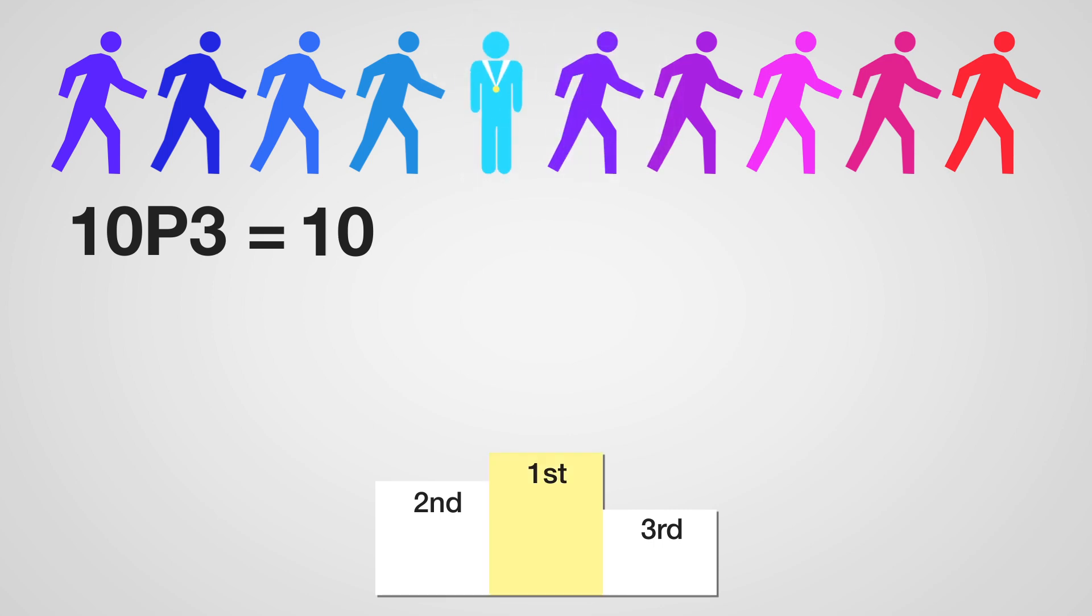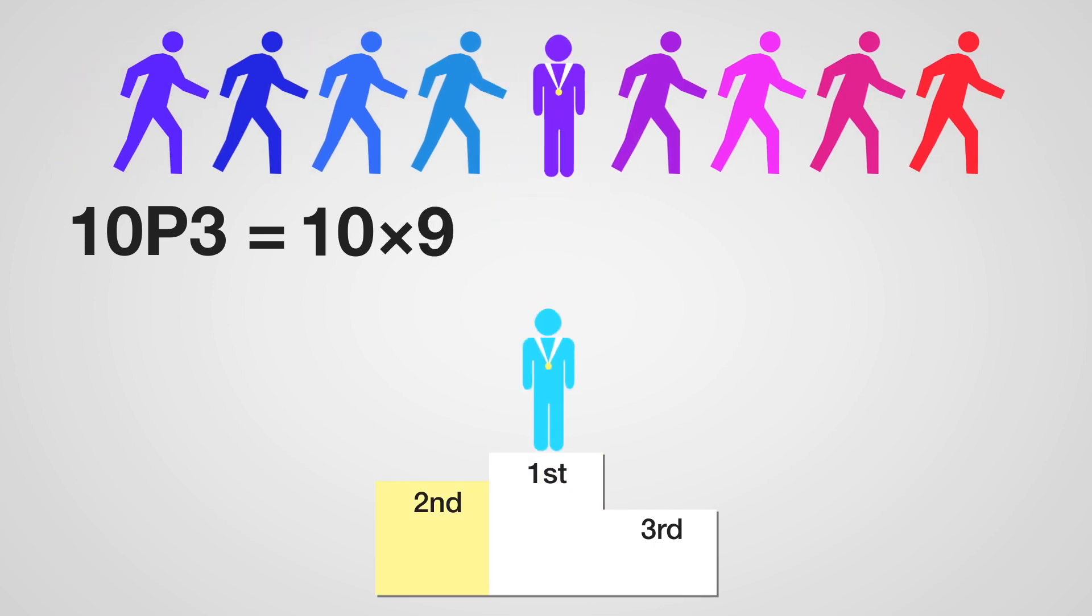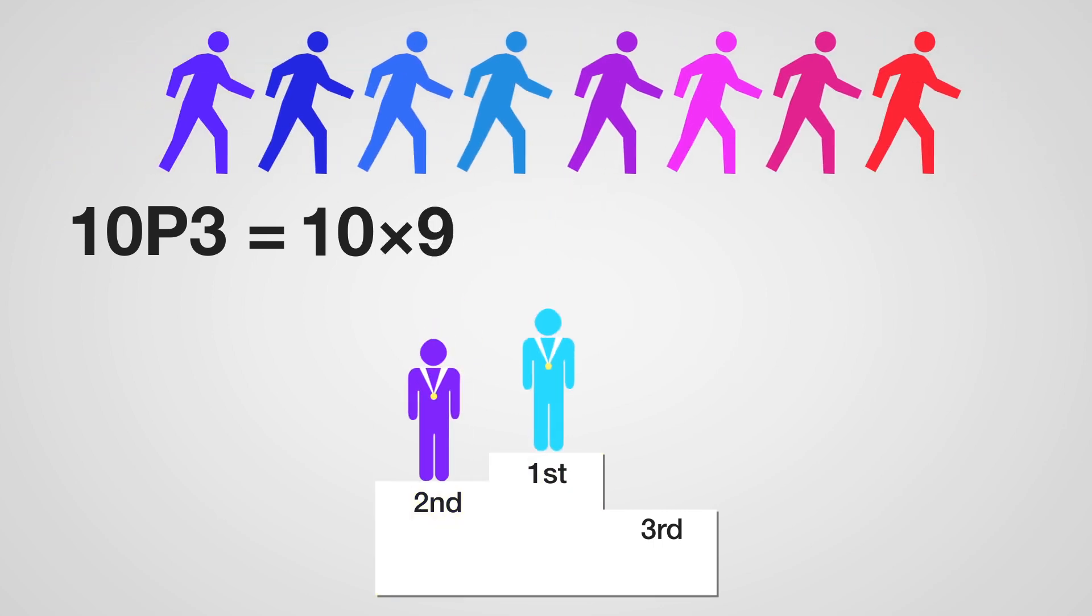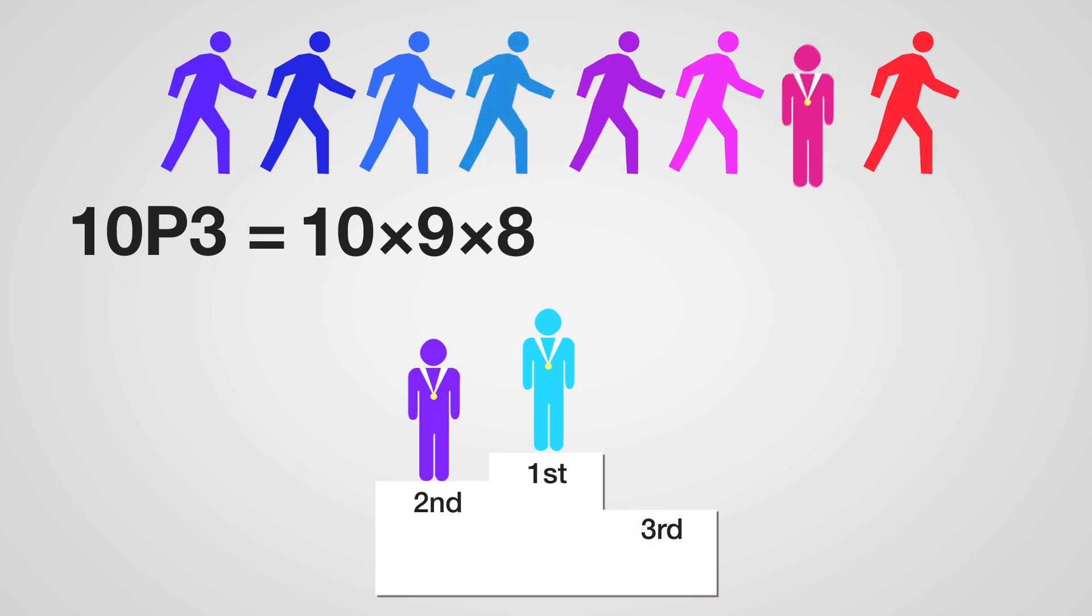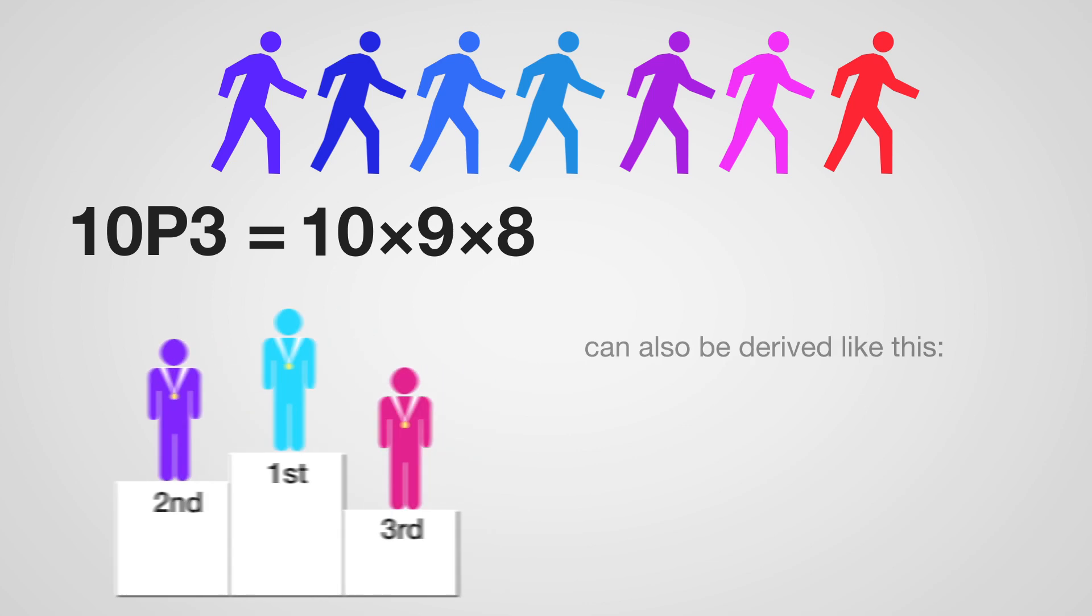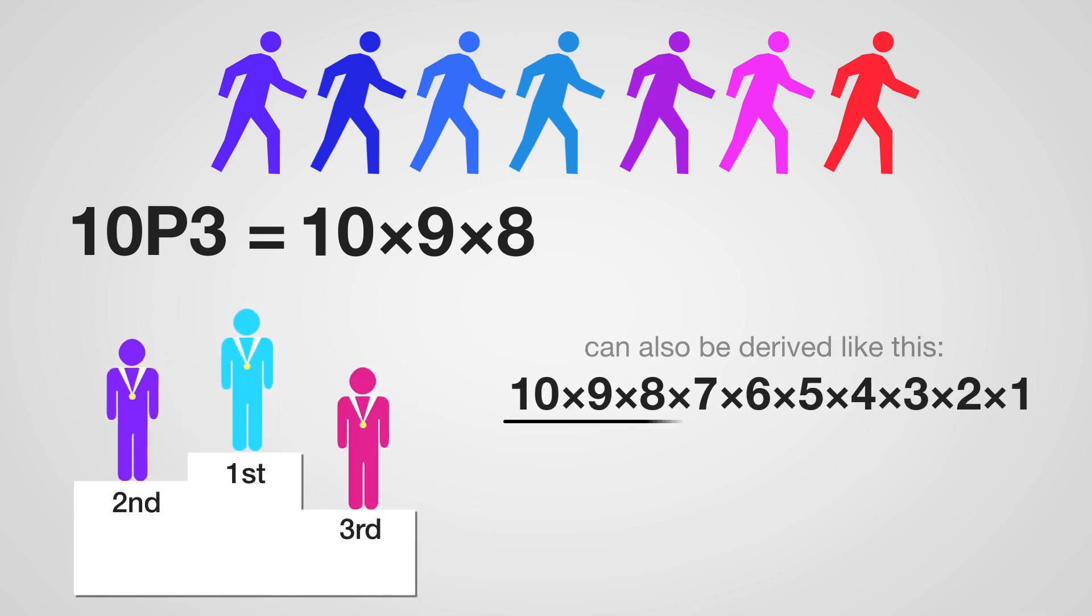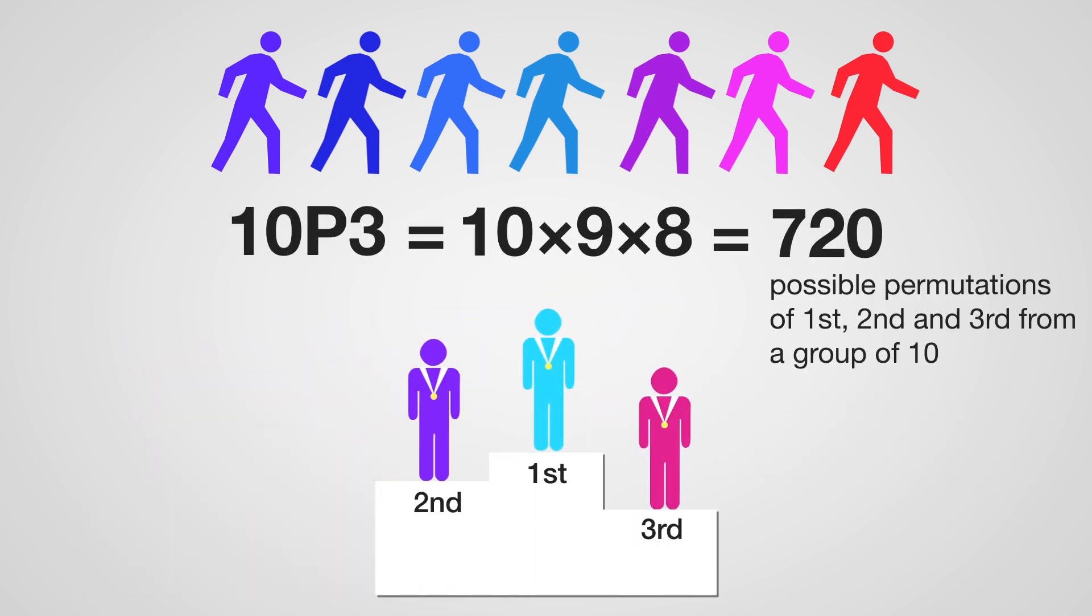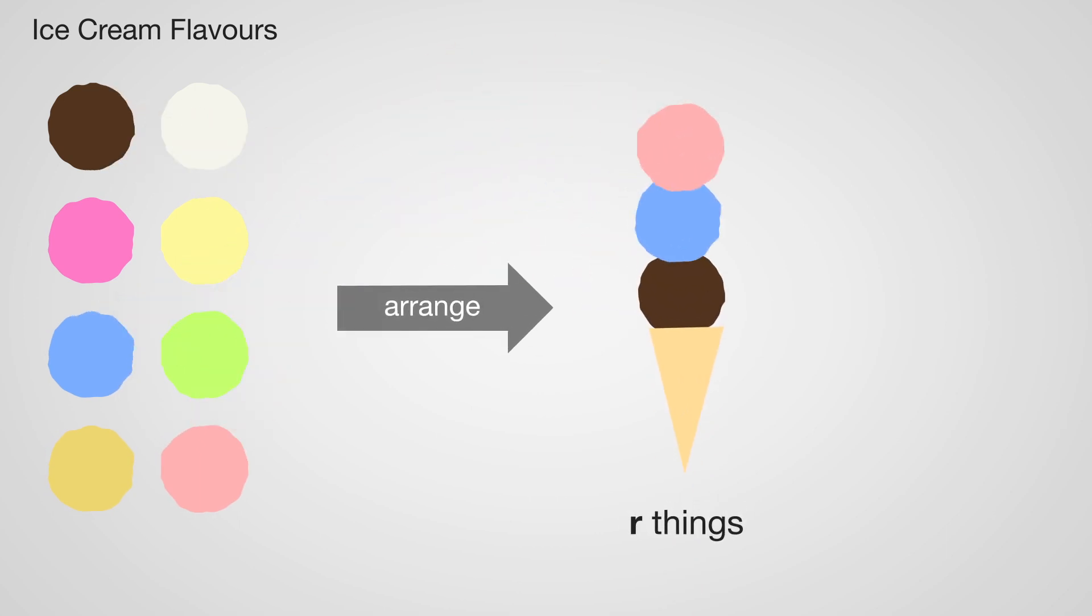That's 10 for the first spot, 9 for the second, leaving for third just 8. That's 10 factorial over 7 factorial. You've counted every case when you arrange r things from a set of n.